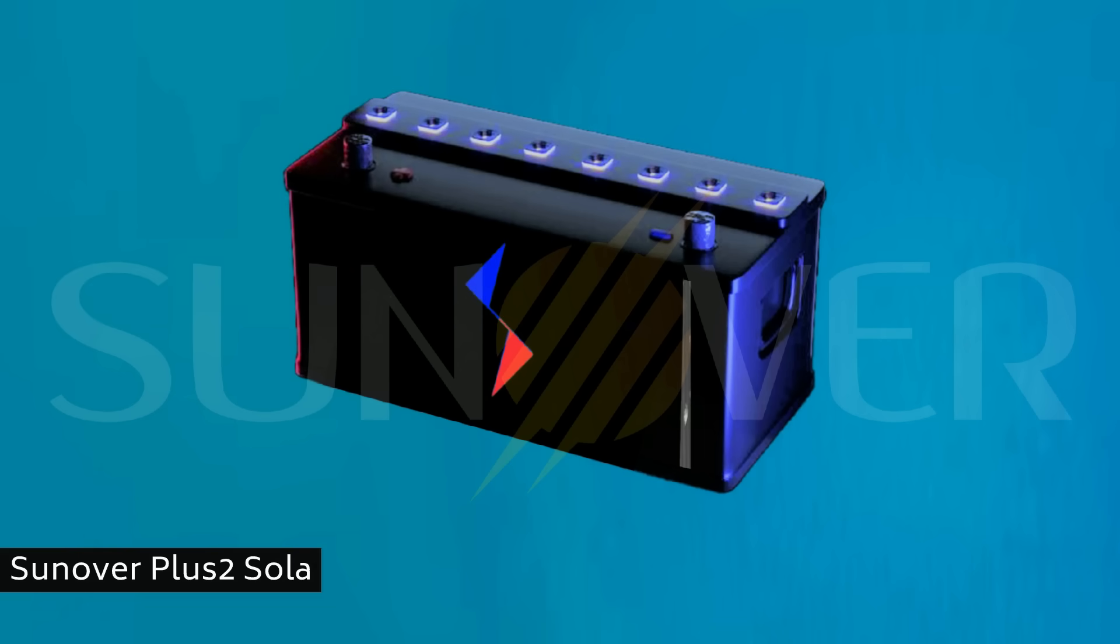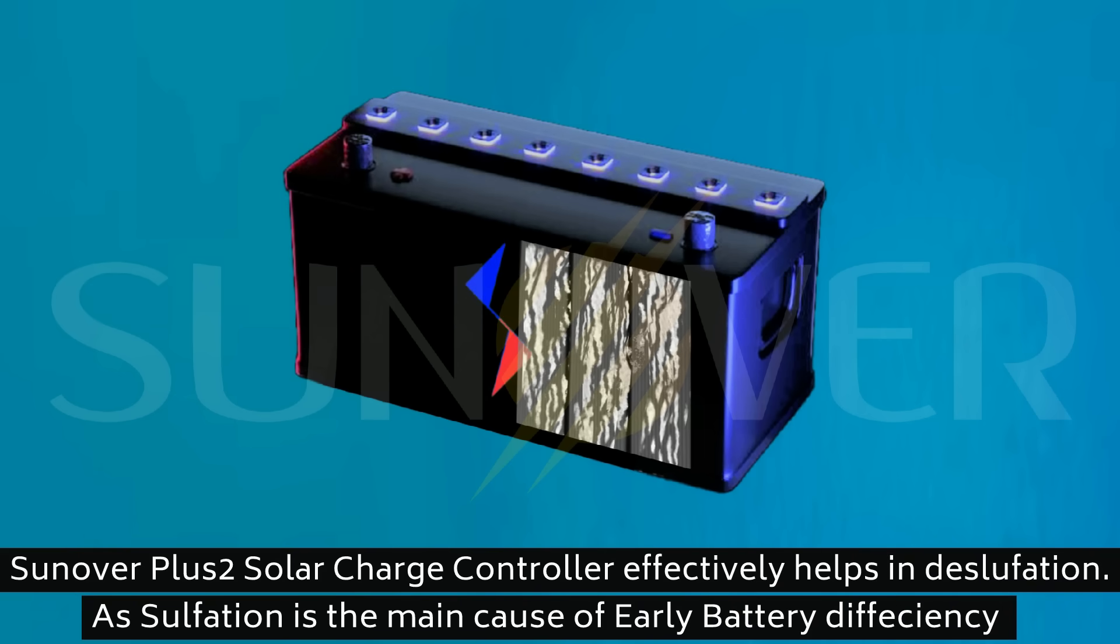In fact, the Sun Over Plus Two solar charge controller helps eliminate sulfate deposits, which are the most common cause of premature decline in battery efficiency.